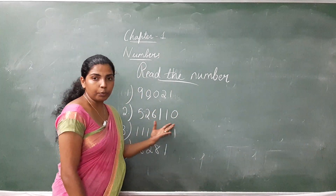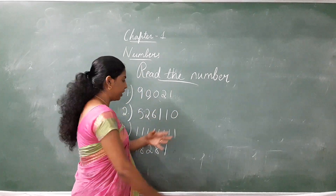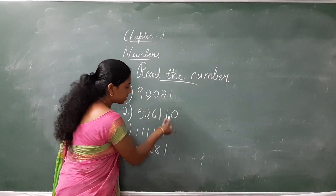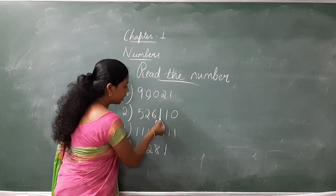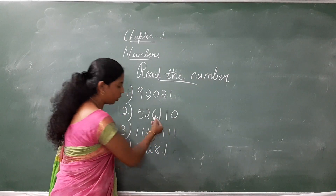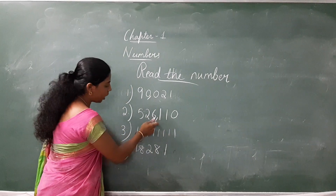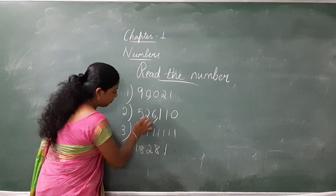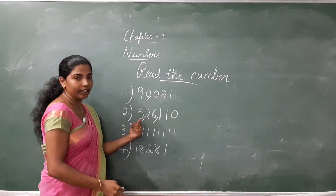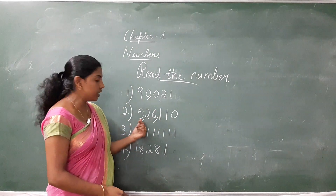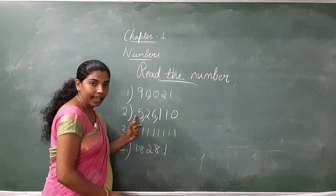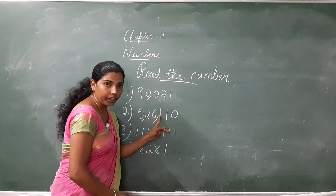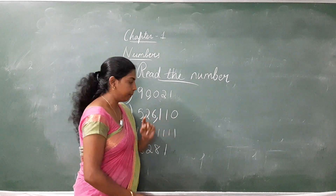Next question. We have to put a comma and read the number. After each period we have to put a comma: ones, tens, hundred — comma — thousand, ten thousand — comma — and lakh. So the number is five lakh, twenty-six thousand, one hundred and ten.